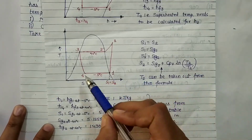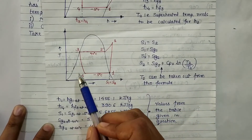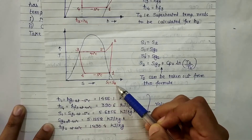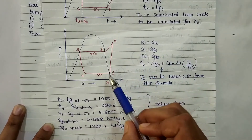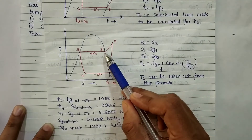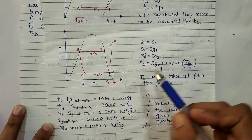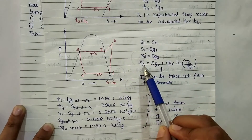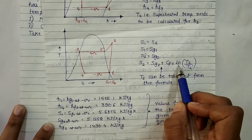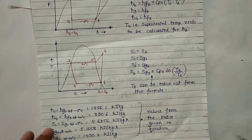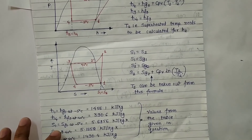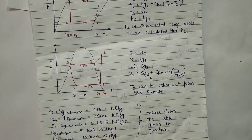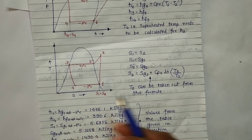For calculation of T2, since compression is an isentropic process, S1 equals S2. S1 equals Sg1 at minus 5 degree Celsius. S2-dash is Sg2 at 40 degree Celsius. Since point 2 is in the superheated region, S2 is calculated using the formula: S2 = Sg2 + CPV × ln(T2 / T2-dash). T2 can then be solved from this formula. The known values of H1, H4, S1, Sg2, and Hg2 at 40 degree Celsius are taken from the table.